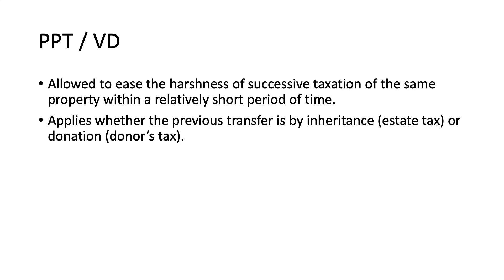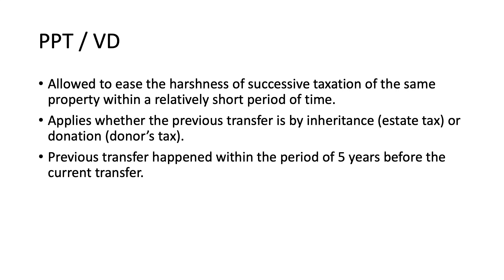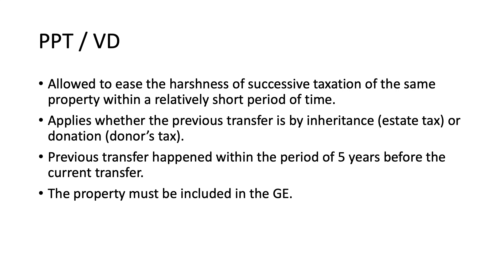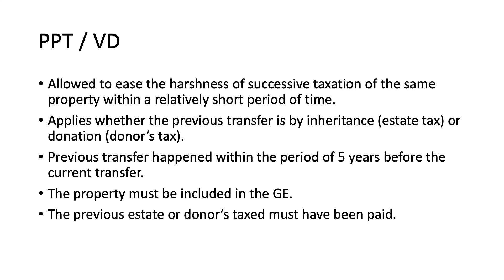Before the current decedent died, he received an inheritance — thus there was an estate tax paid — or he received a donation subject to donor's tax, and now he has died and the same property will again be subjected to estate tax. It is required that the property received must first be included in the gross estate before you can deduct the PPT or vanishing deduction, and it is required that the previous estate tax or donor's tax has been paid in order to claim the property previously taxed or vanishing deduction.